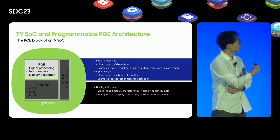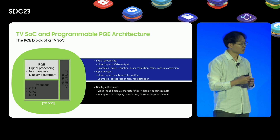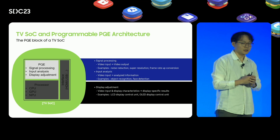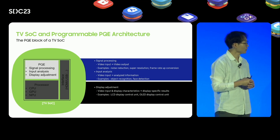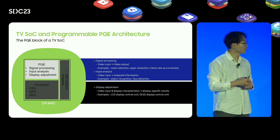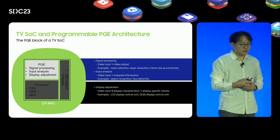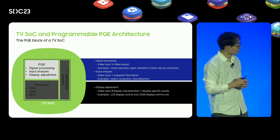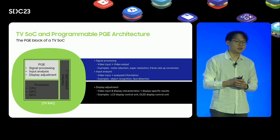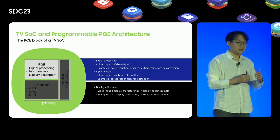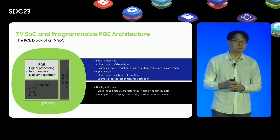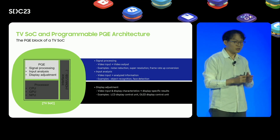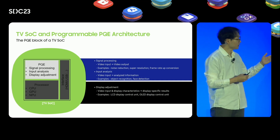The input analysis part corresponds to the computer vision field academically. It similarly takes video input but produces analyzed information as output. Specific examples include object recognition and face detection. The display adjustment block covers more TV-specific functions. Specifically, in LCD TVs there is a backlight unit, and there should be a backlight control unit to improve perceptual picture quality. In OLED display cases, which are self-emitting devices, we usually include a burn-in protection unit. Those kinds of blocks make up the display adjustment part.